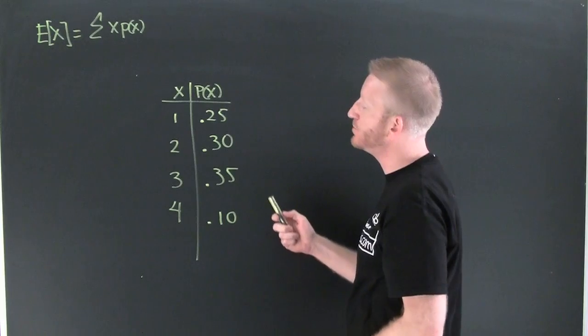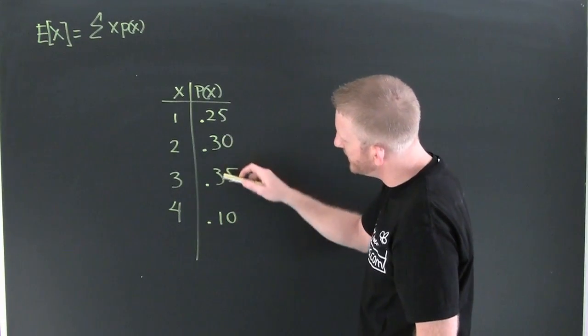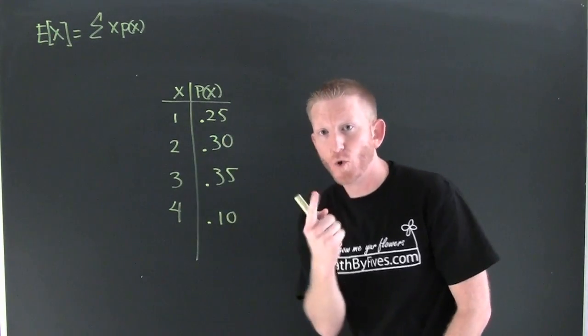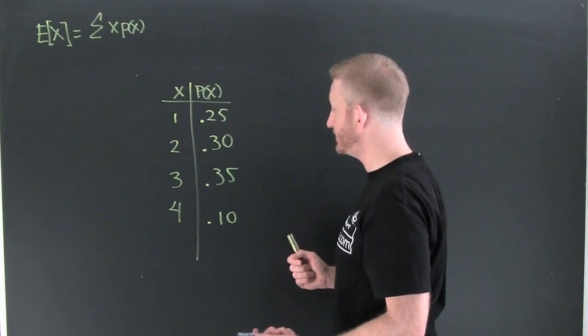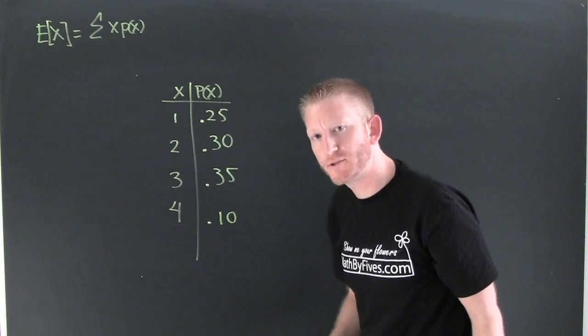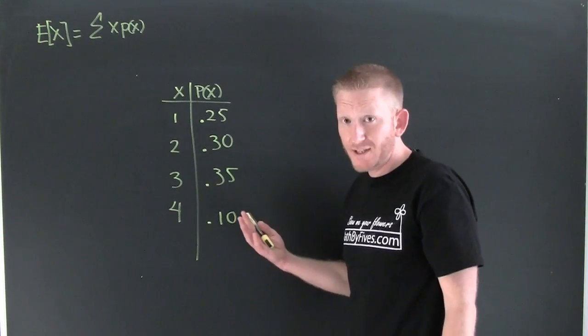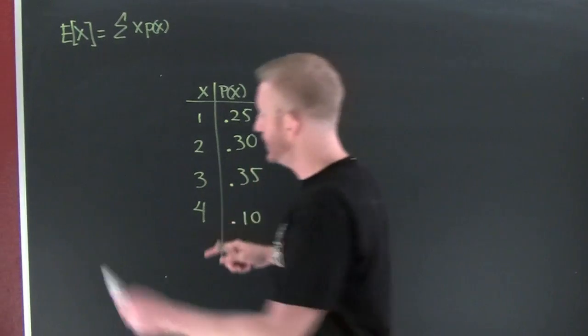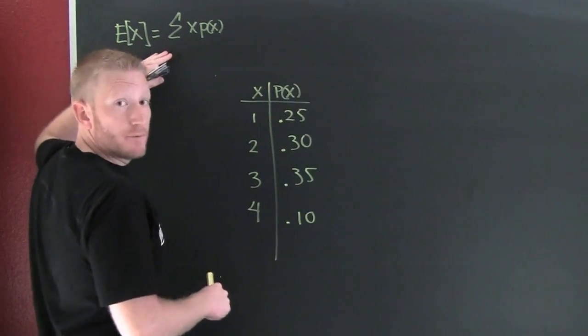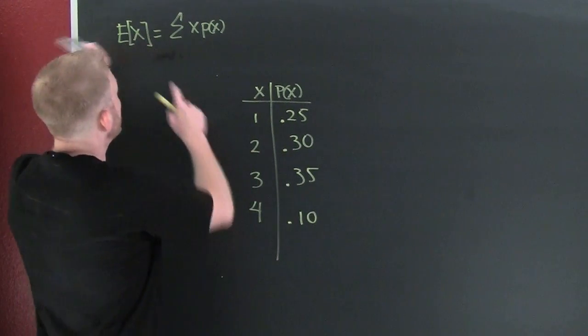This is a probability distribution, a discrete one. Why? Because if I add this, this, this, and this, it adds up to be 1. Further, all of my probabilities are between 0 and 1. So we need to talk about how to get the expected value.